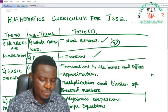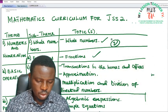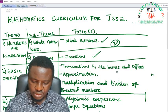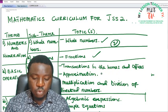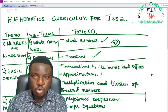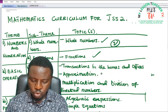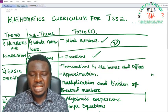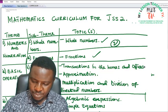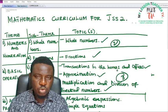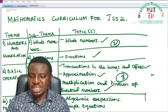For Basic Operations, we have topics like transactions in the homes and offices, approximation — which is also a continuation of what you were taught in GSS1 — and multiplication and division of directed numbers. So we have approximately two to three topics under Basic Operations, and all these are continuations from where we stopped in GSS1.